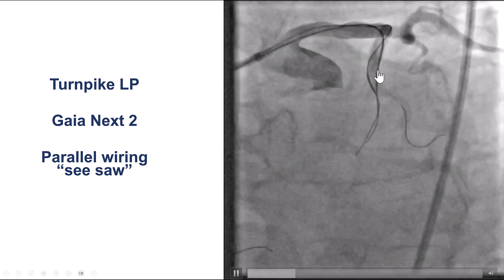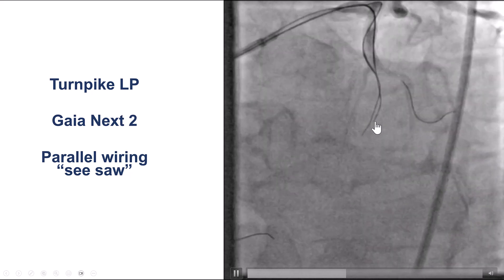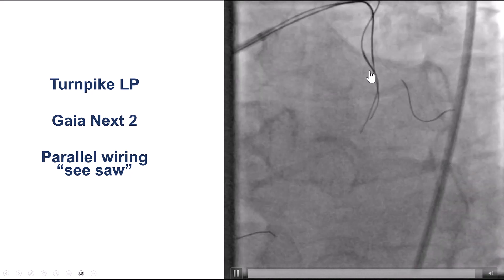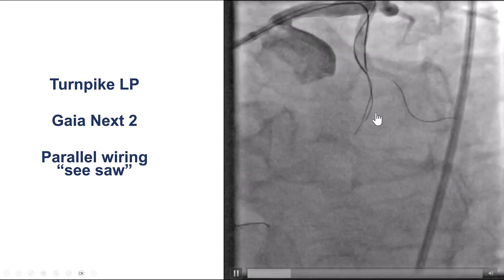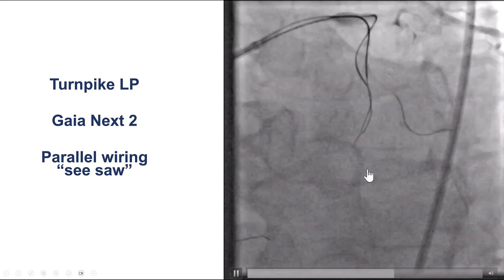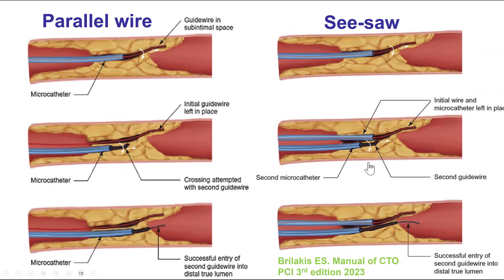With the first wire in the extraplaque position, the options were to attempt re-entry or to do parallel wiring. We attempted parallel wiring, placing a second microcatheter and trying again with another Gaia NX2 wire, which is very directable, to direct it along the course of the vessel. This is the seesaw technique — parallel wiring with two separate microcatheters — whereas in classic parallel wiring, the first wire is left in place and only one microcatheter is used over the second guidewire.